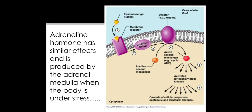Here's a diagram to show how this response works. The first messenger in our particular example is adrenaline. Adrenaline is the hormone that acts as the first messenger, and what it does is it binds to a specific and complementary receptor within the membrane of the target cell. In this particular example it would be the hepatocytes within the liver. This receptor has a complementary and specific shape to adrenaline, so when they bind together it triggers a response inside the cell by activating an enzyme called adenyl cyclase.